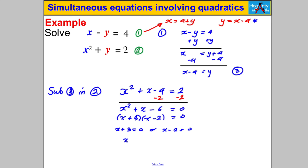Therefore x + 3 = 0 or x - 2 = 0, giving x = negative 3 or x = positive 2. Each x gives its own y. Substitute back into equation 3, which directly gives y: y = x subtract 4. For x = -3: y = negative 3 subtract 4 = negative 7. For x = 2: y = 2 subtract 4 = negative 2.